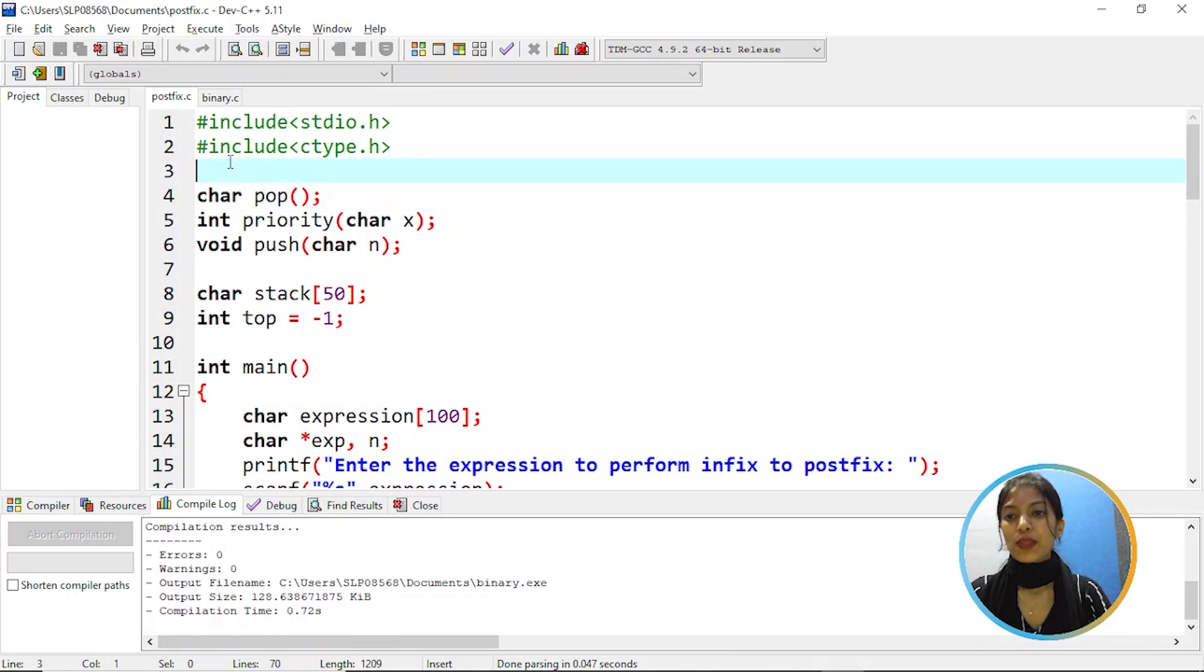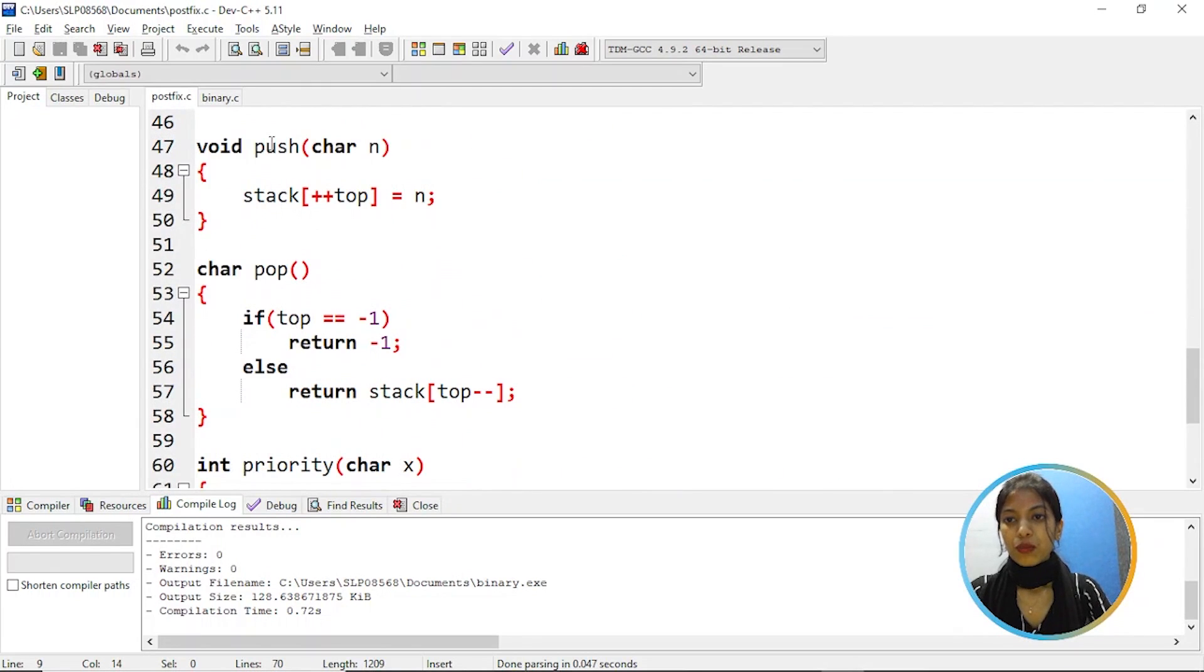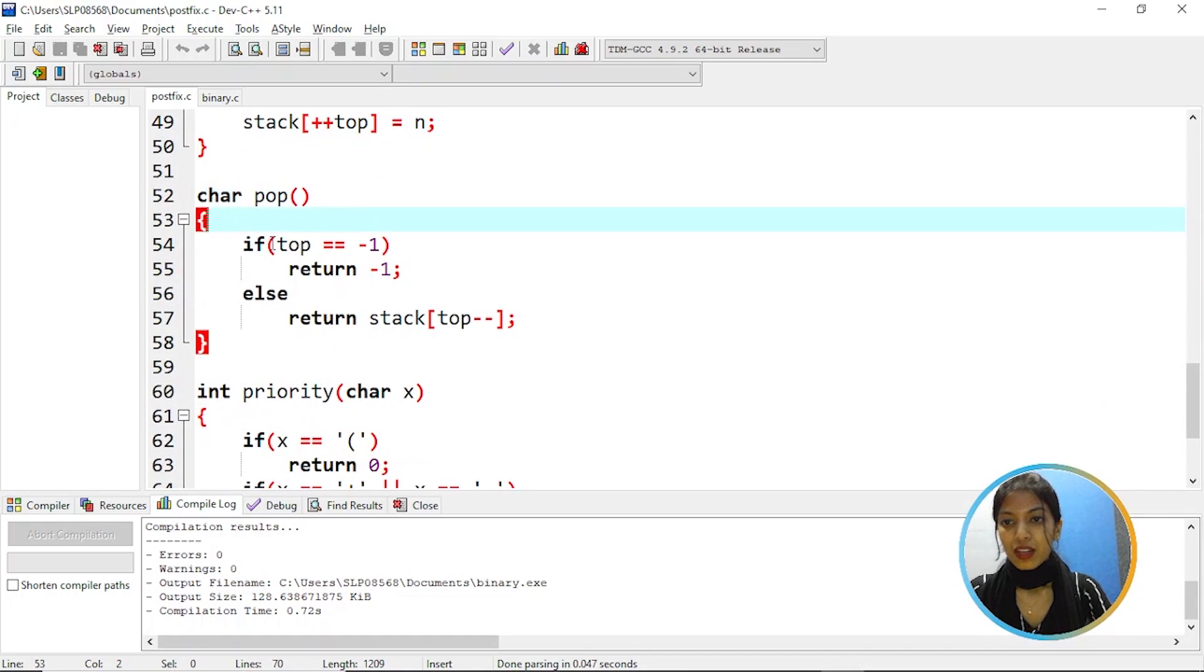So we have a pop priority and push function which are declared and then we are declaring stack of size 50 and top initially is equal to minus one. Then going back to function, push is used to insert an item into the stack. So n is assigned to stack of plus plus top and pop is to remove or delete an item. So if top is equal to minus one then return minus one. That means top is empty. Else return stack of top minus minus that means decrementing the top by minus one.